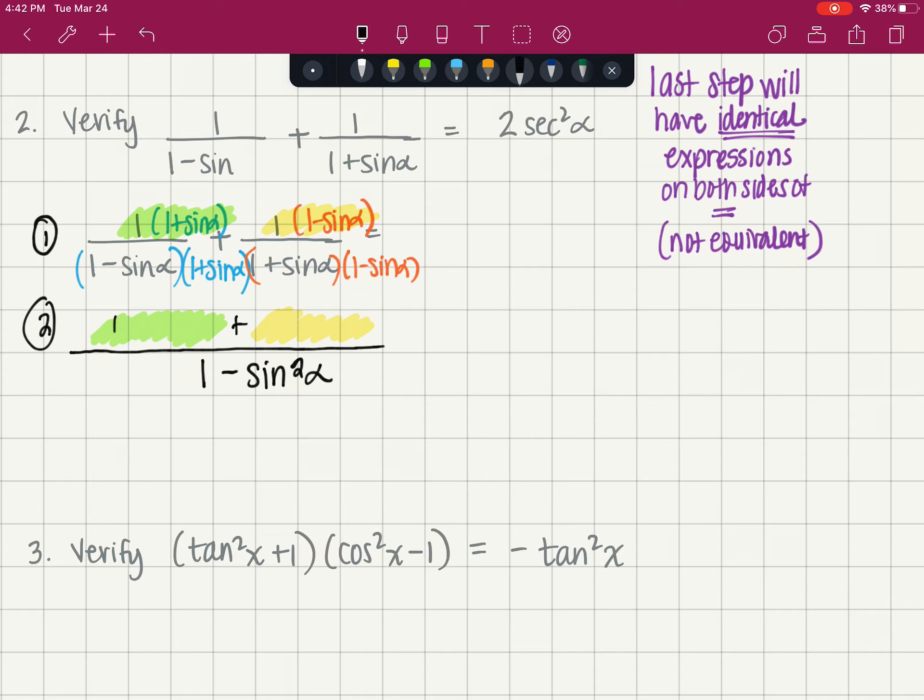So the first numerator, one times one plus sine, and the second numerator, one times one minus sine. And then I'm going to simplify the numerator and the denominator, because one minus sine squared is cosine squared of alpha. And that's why we did all those problems in the previous lesson.